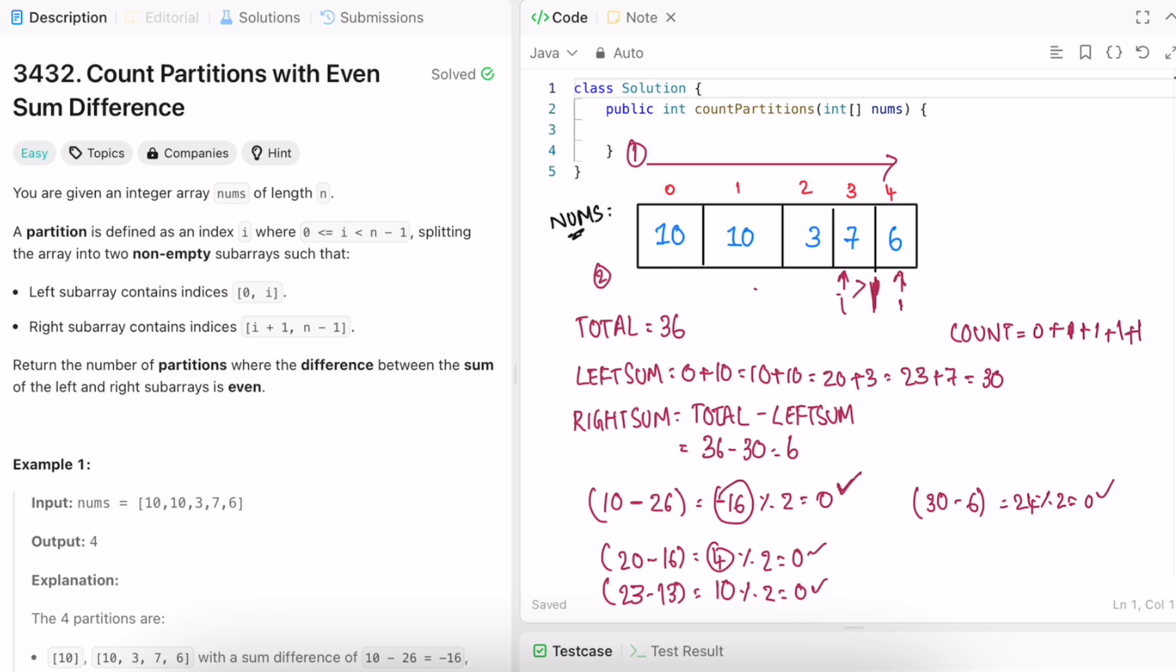Because if i goes here, this entire thing will be our left array and there will be no elements in our right array, which is not possible because we need two non-empty subarrays. So here we found our count is equal to 4. So 4 will be returned as your output and 4 is the expected output.